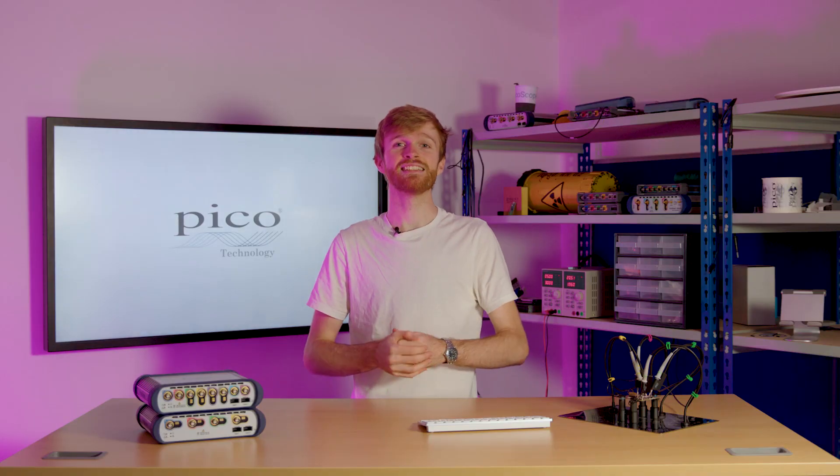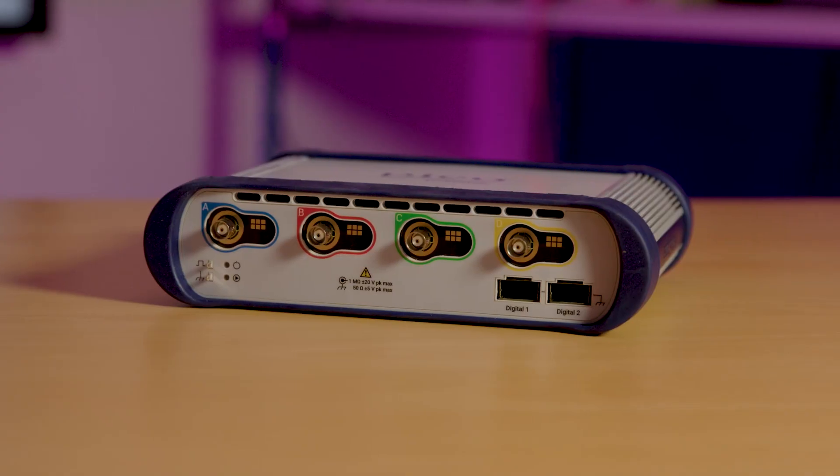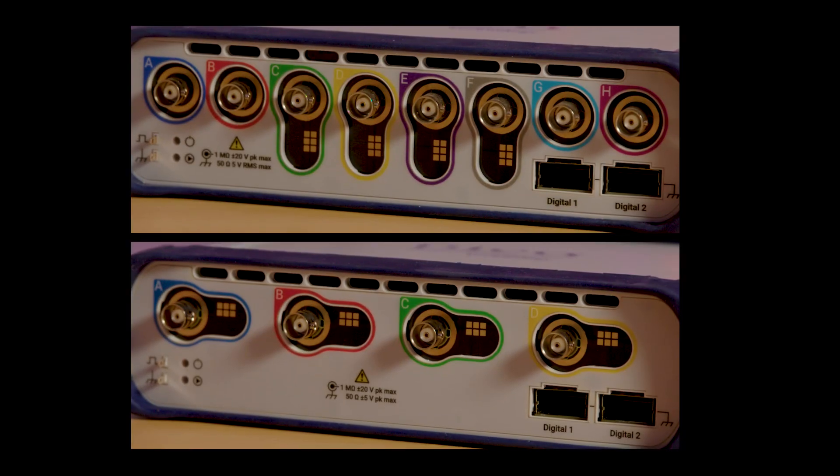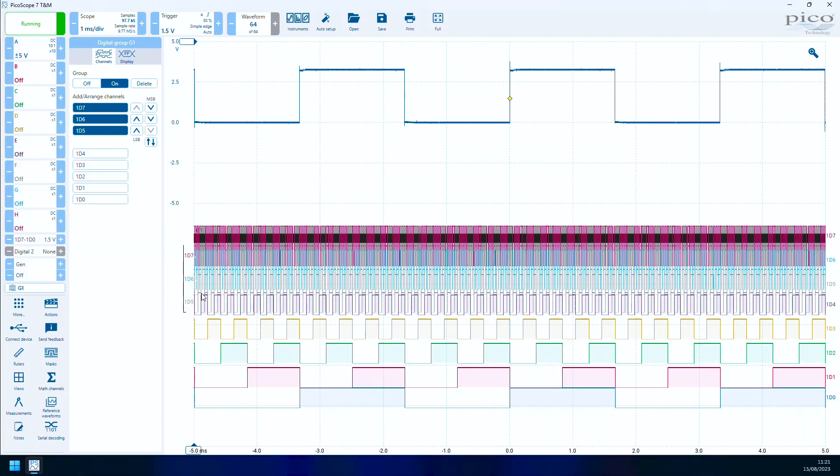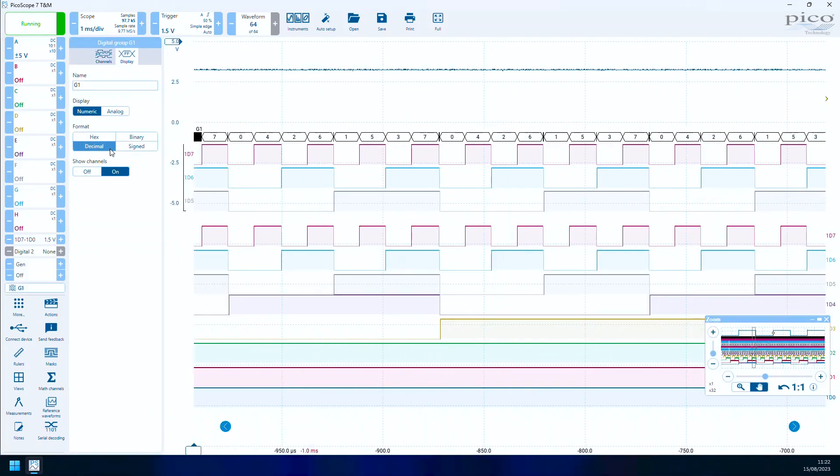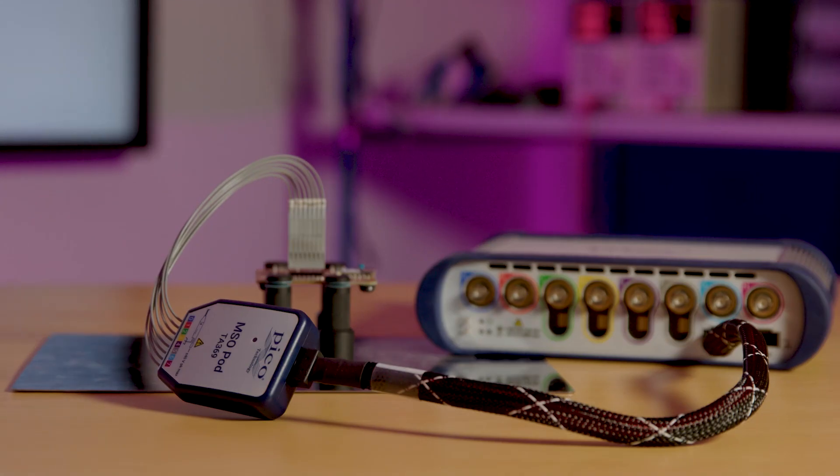The 6000e series can be configured with either four or eight channels with an intelligent probe interface designed for our high-speed probes, with an additional 16 channels for analyzing multiple digital interfaces and logic analyzing with specialized MSO pods.